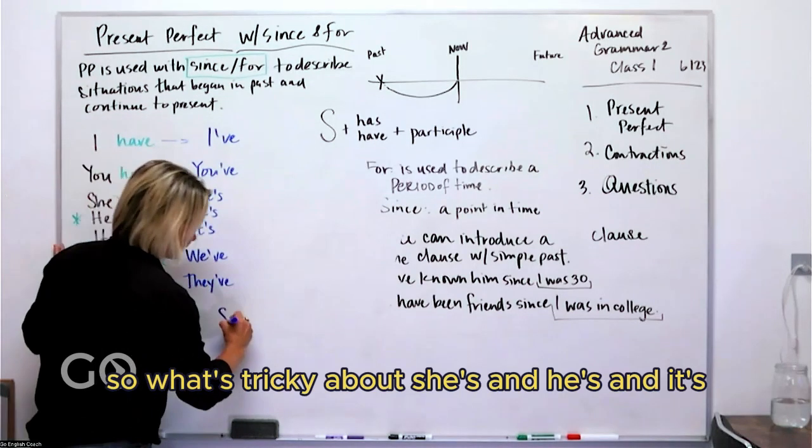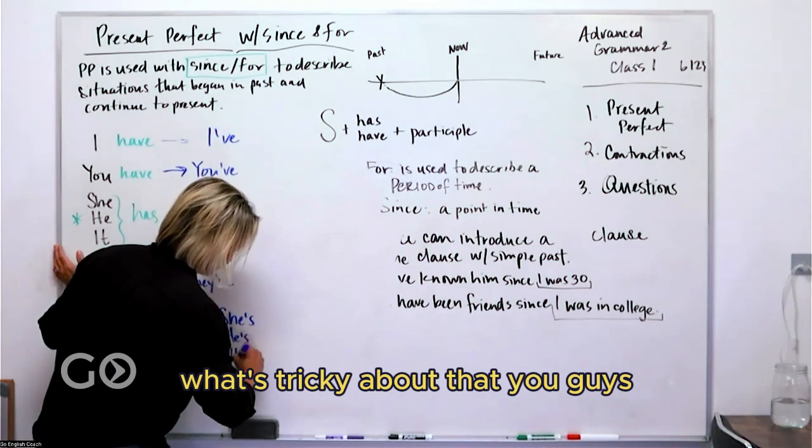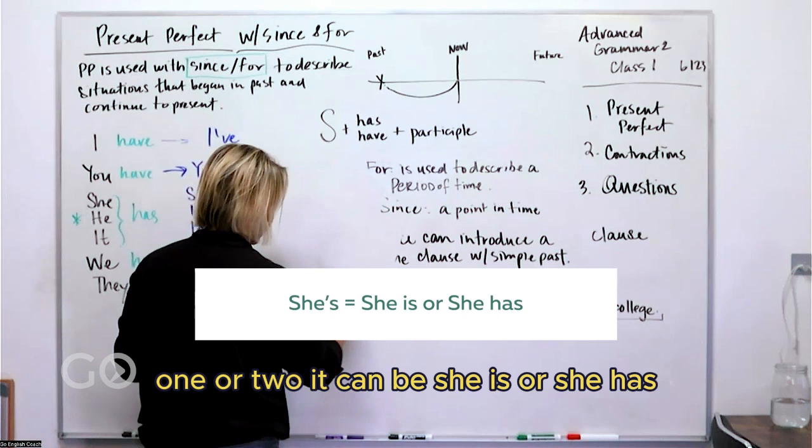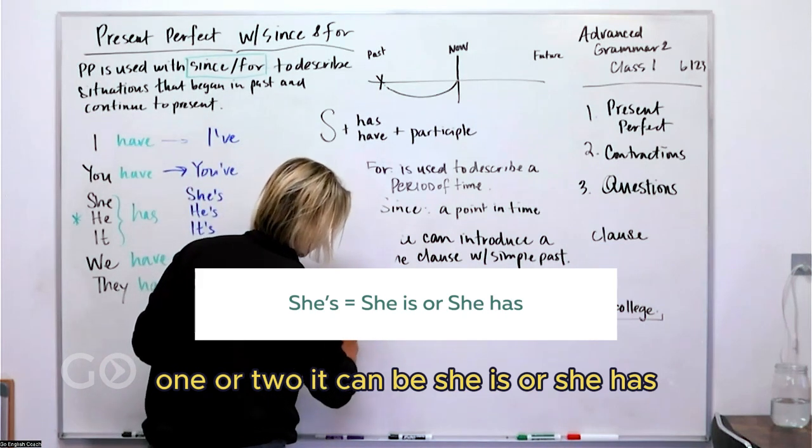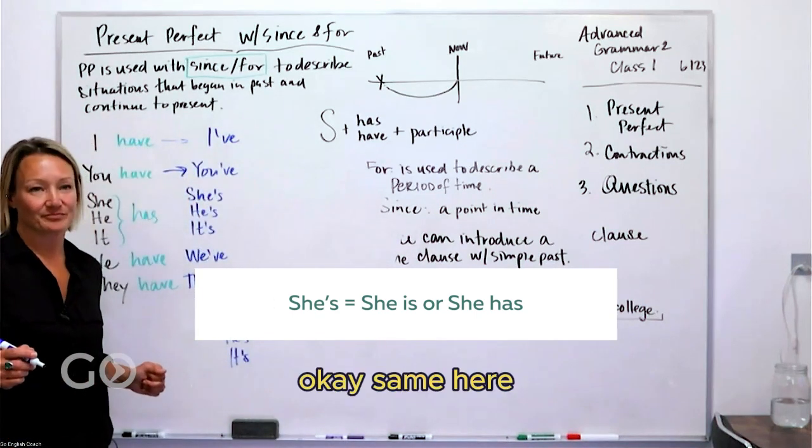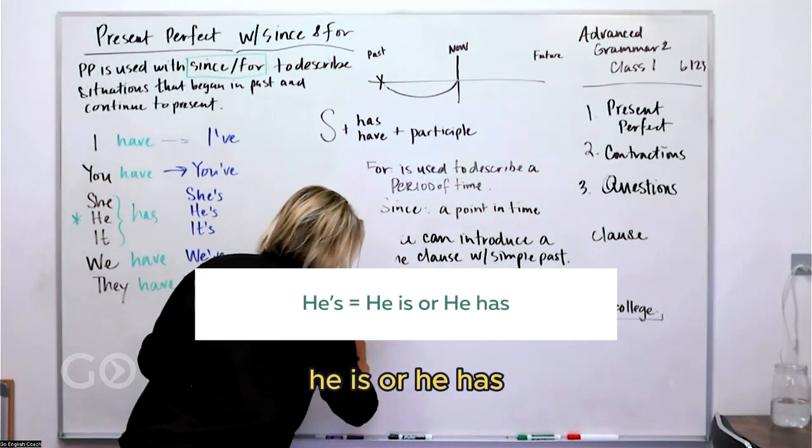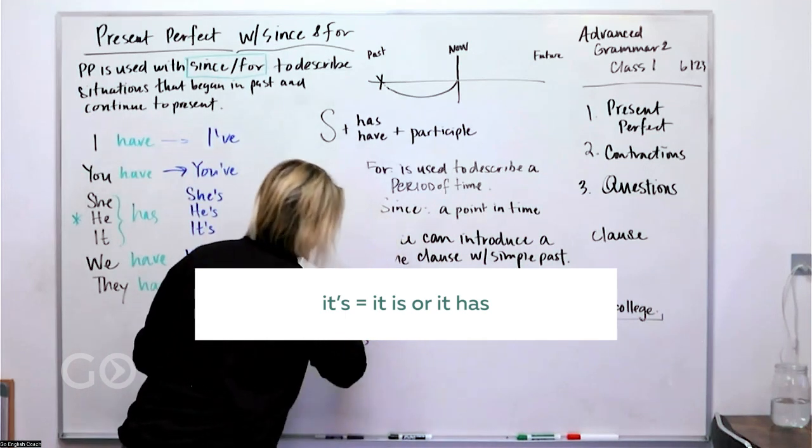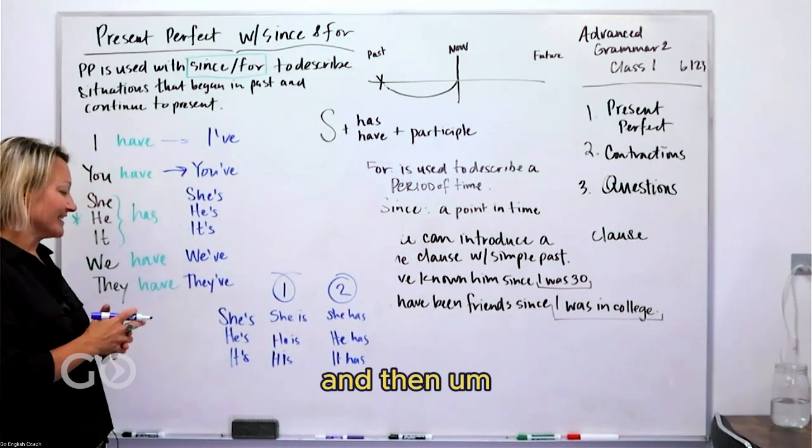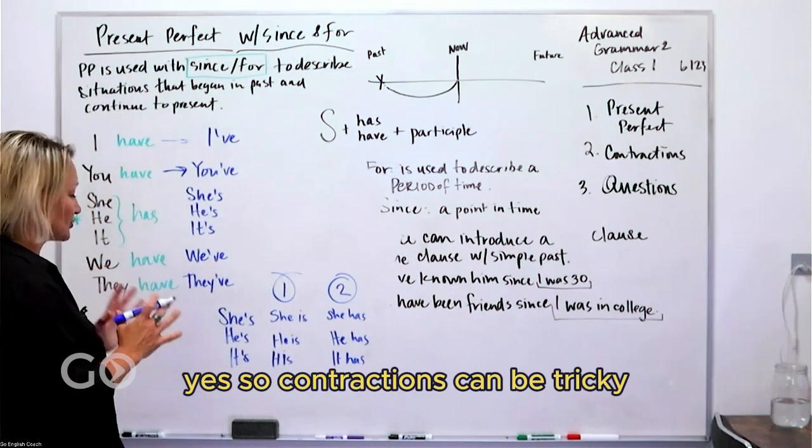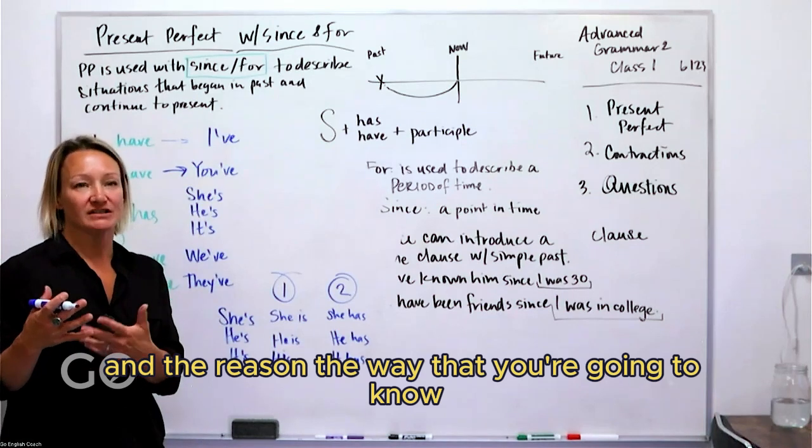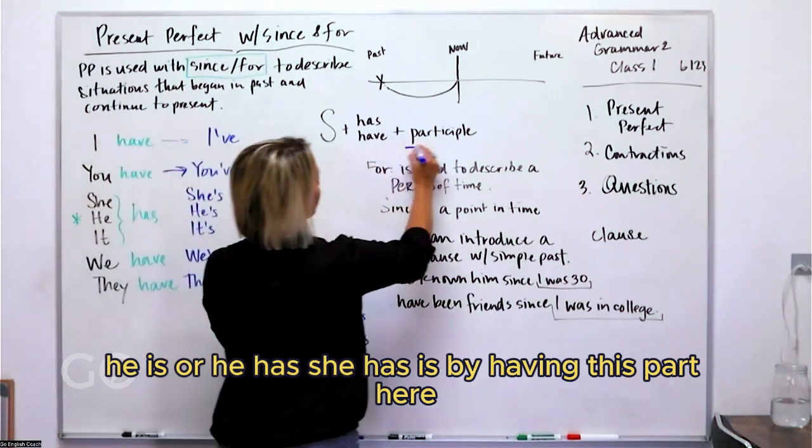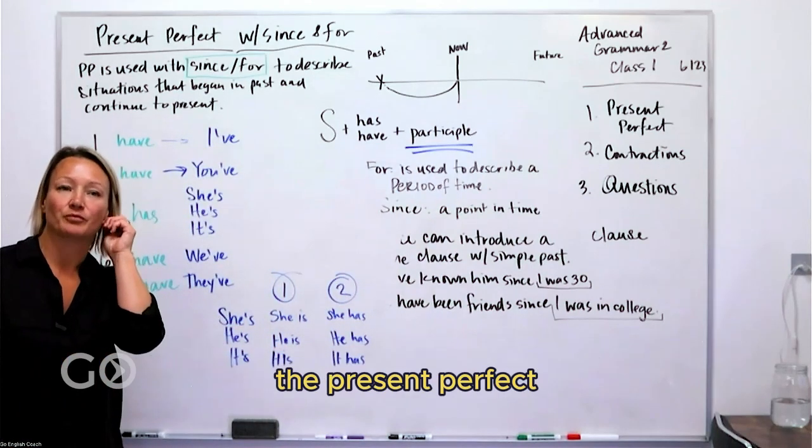Now what's tricky about she's and he's and it's? These contractions can be two things, one or two. It can be she is or she has. Same here. He is or he has. It is or it has. So contractions can be tricky. And the way that you're going to know if you're referring to she is, he is, or he has, she has, is by having this part here. If there's a participle, then you're using the present perfect.